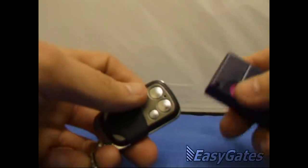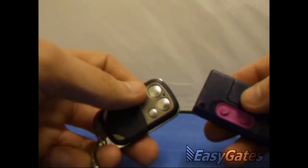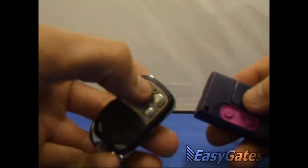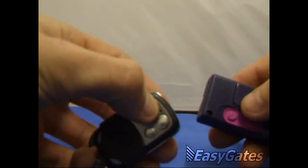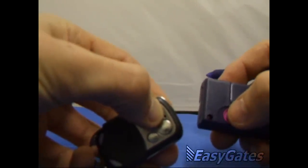Grab the original remote which you want to clone, hold down the button you wish to program, and hold down the button of the alternate remote.